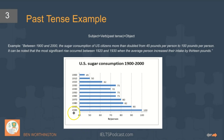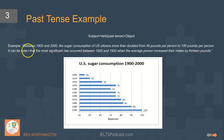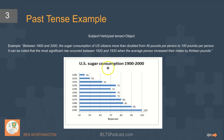Here we can see the entire chart is obviously in the past, so we're going to want to use the simple past. It can be noted — the significant rise occurred between 1920 and 1930 and the average person increased their intake by 13 pounds.